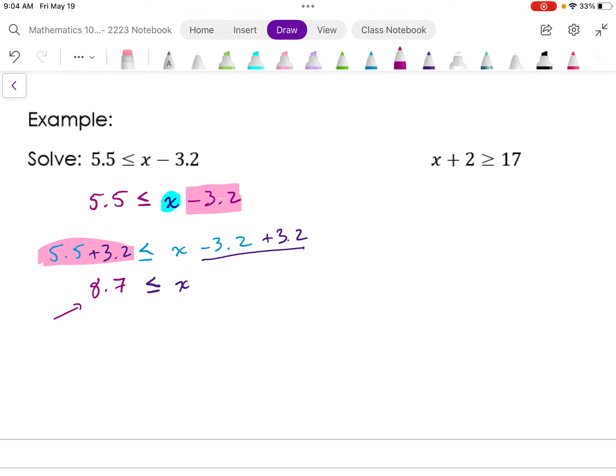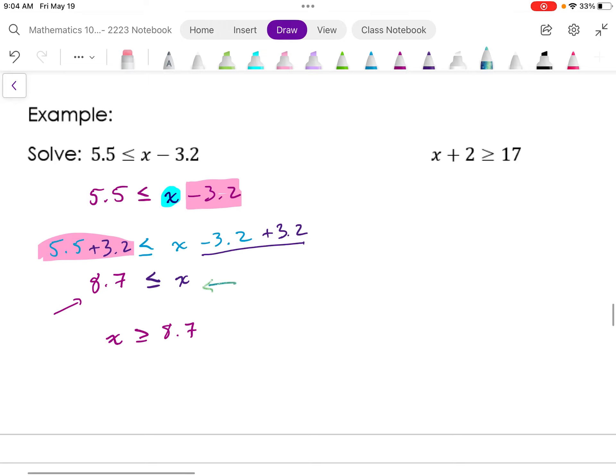And typically, we do not write our inequalities like this. We rewrite them so that the variable is on the left. Now, it is important to understand here what we're saying is 8.7 is less than or equal to x. But if you change the direction and how you read it,